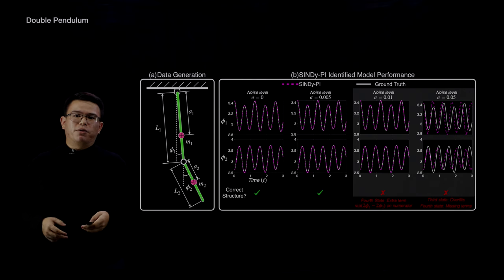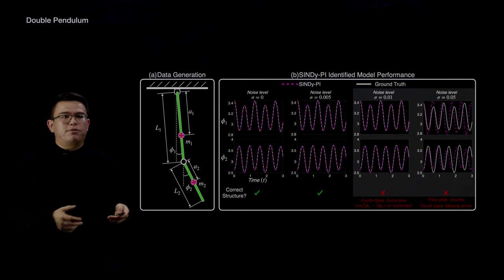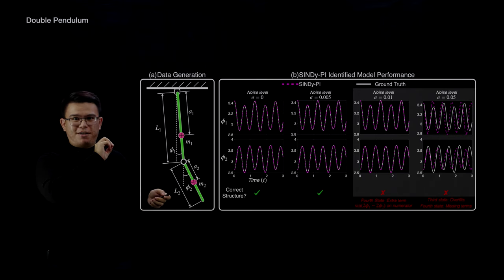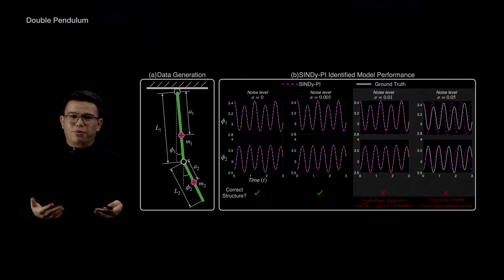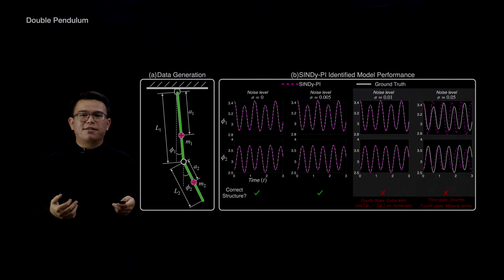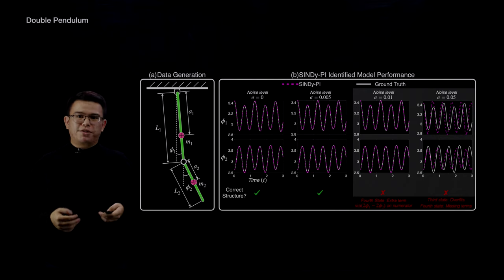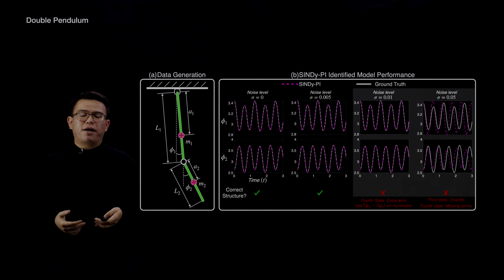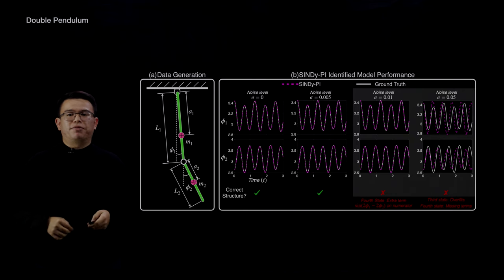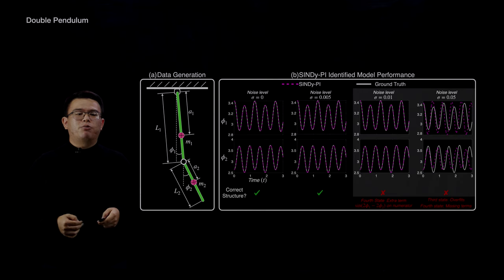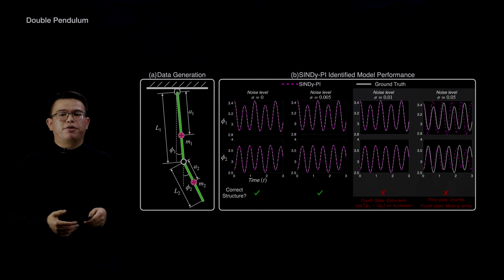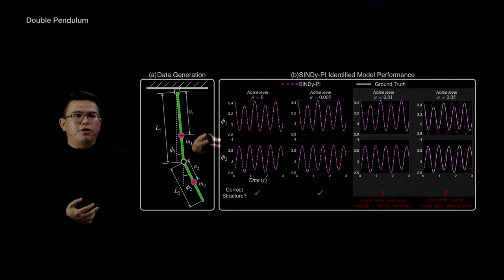The second example is the double pendulum. Although it only has two links, the double pendulum is a really chaotic and nonlinear system with pretty complicated rational ODEs. We simulated double pendulum in MATLAB under different noise levels, provided those data sets to CINDY-PI, and found that CINDY-PI correctly identifies the ODEs under different noise levels. When we simulate the identified ODEs forward in time, they match really well with the ground truth.